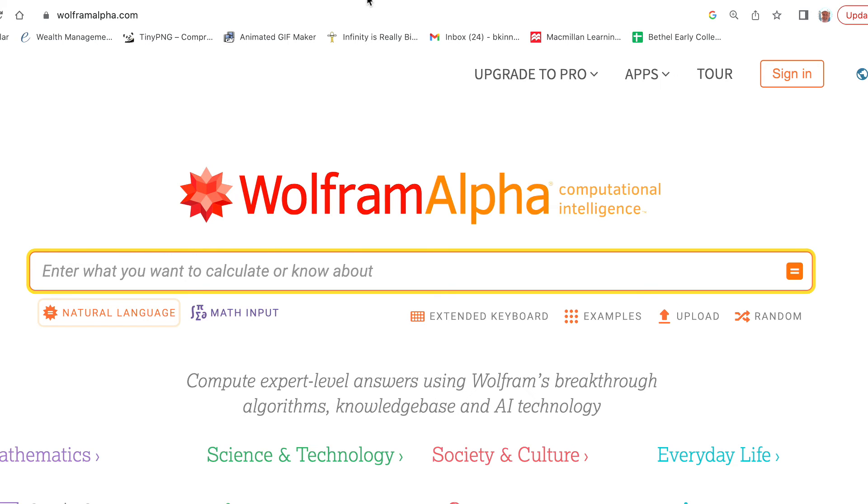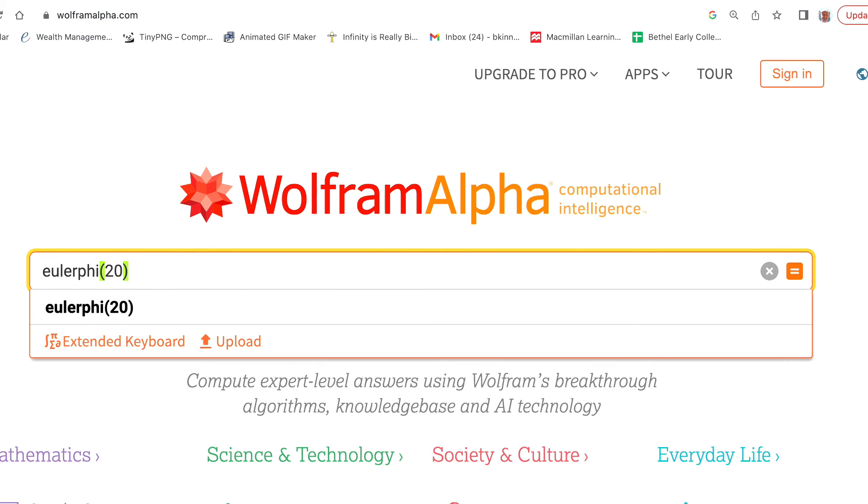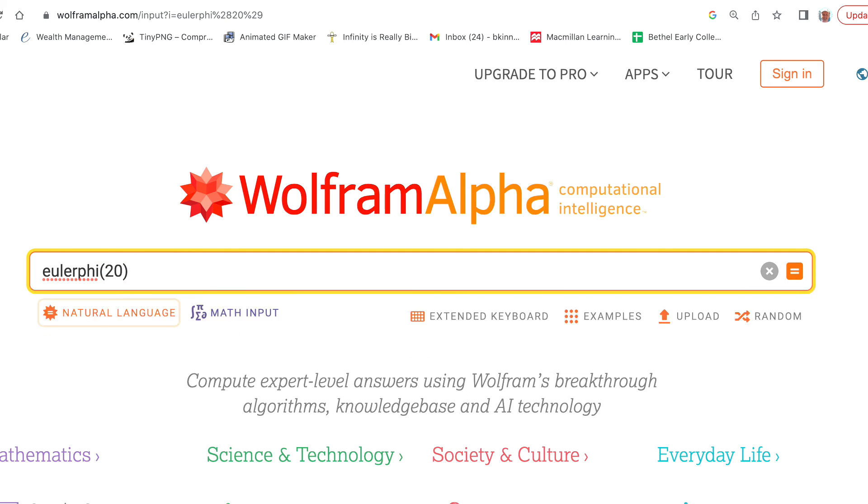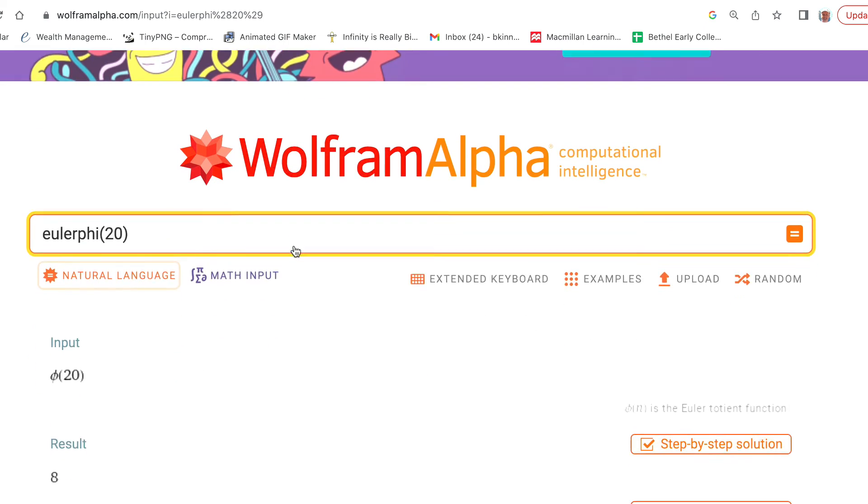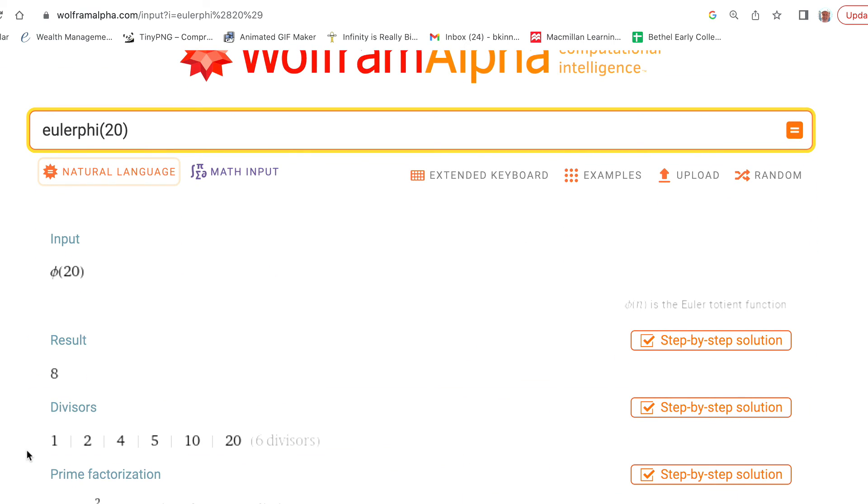Can values of the Euler totient function be found online? Yes. One place is Wolfram Alpha. If you want to find Euler phi of 20, type in Euler phi of 20. This is the Euler totient function value when n = 20. We already saw it was 8, and if you enter this, you see the result as 8. You see what the divisors are; you want to avoid multiples of these numbers when you write U(20).